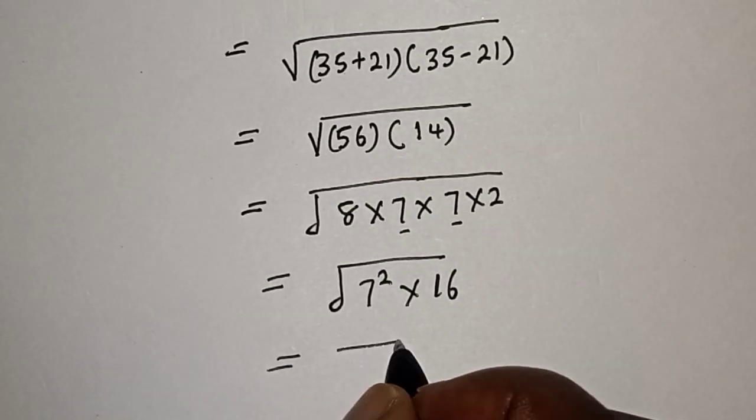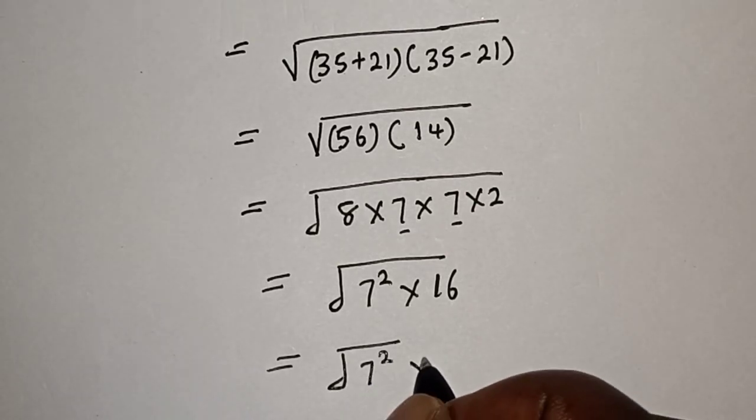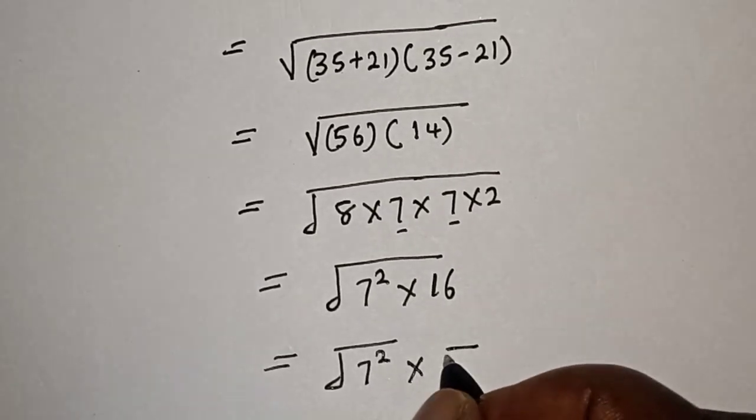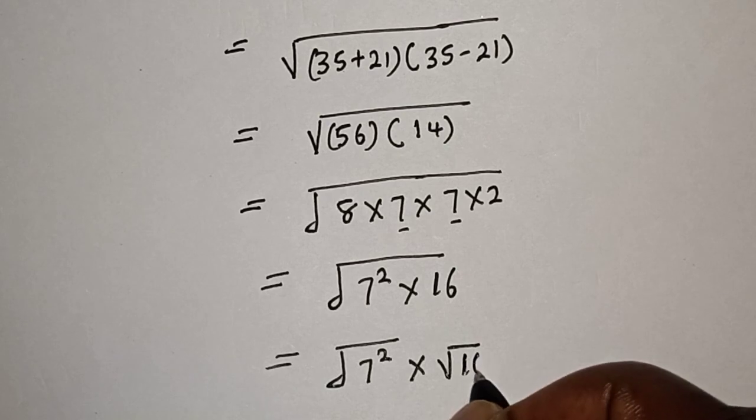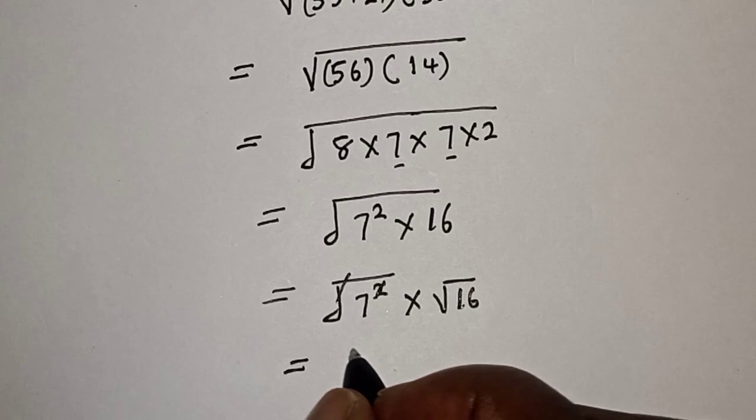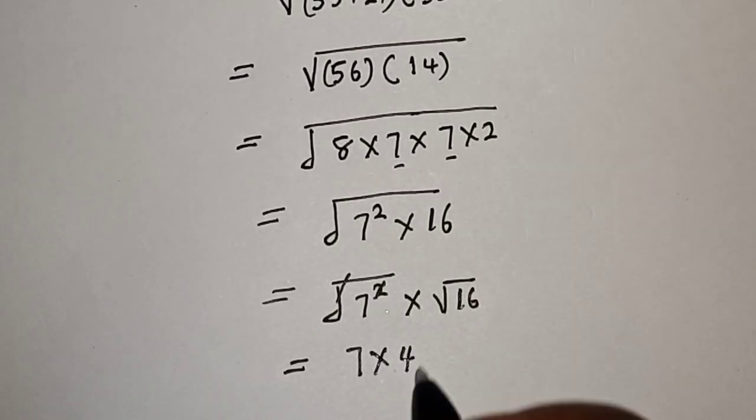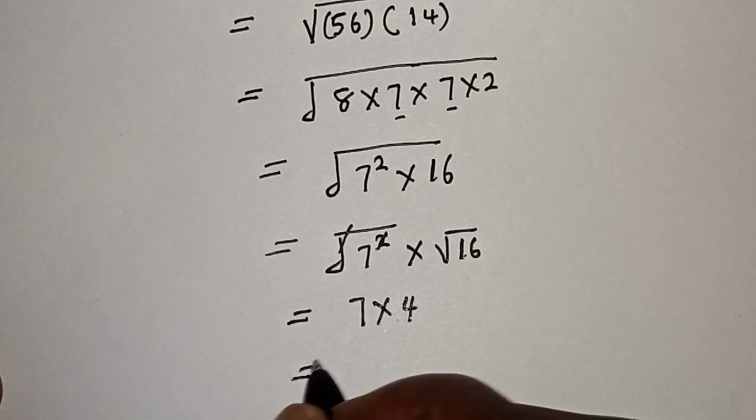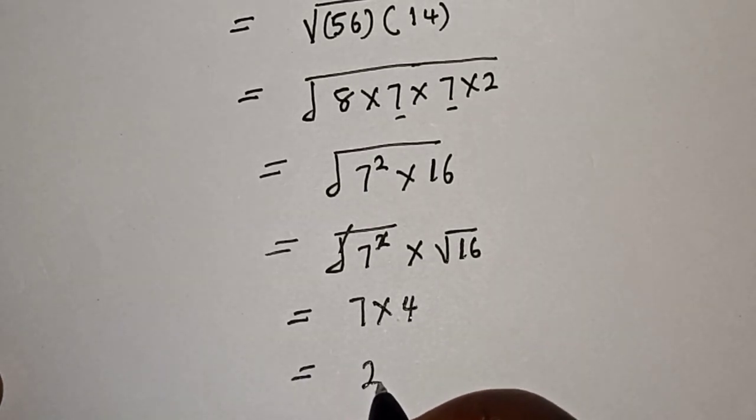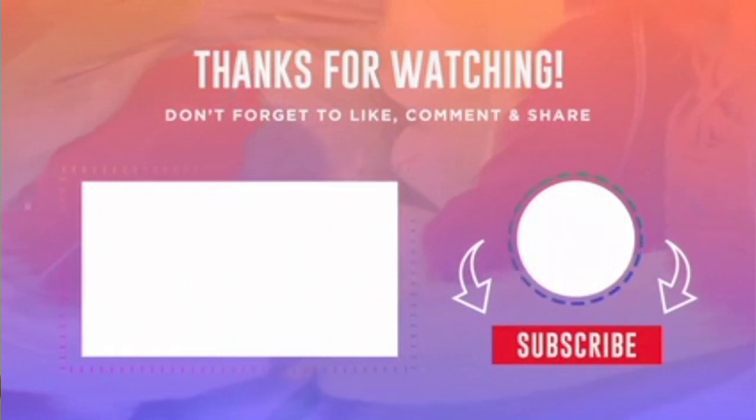This is equal to square root of 7 squared multiplied by square root of 16, which is 4. And this is equal to 7 times 4, equals 28. And that is our final answer. If you enjoyed the class, please don't forget to like, share, comment, and subscribe. Thank you.